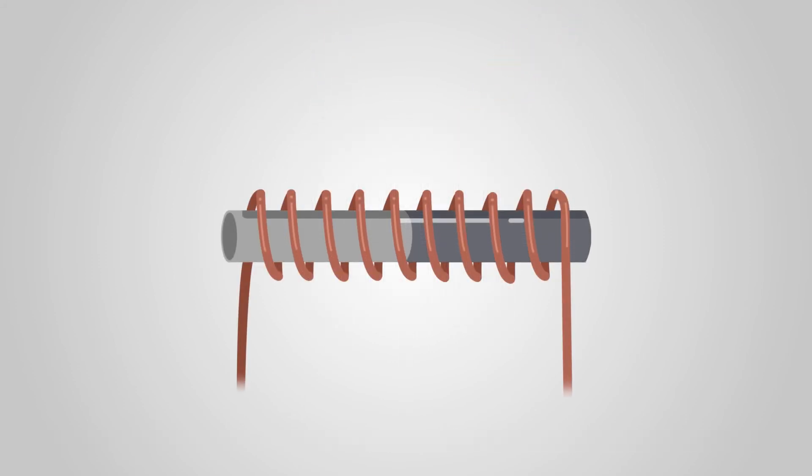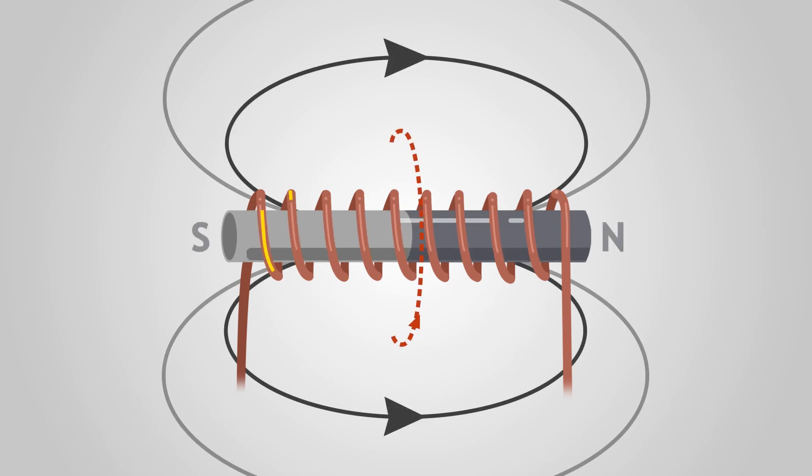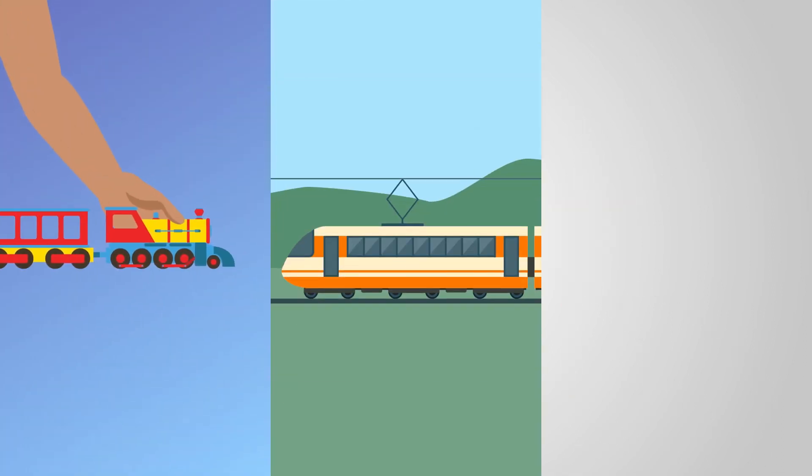Generators also work in reverse. Electricity flowing through a wire coil produces a magnetic field. This is used to make electromagnets, which can force other magnets to move. This is what powers the electric motors found in everything from toys to trains.